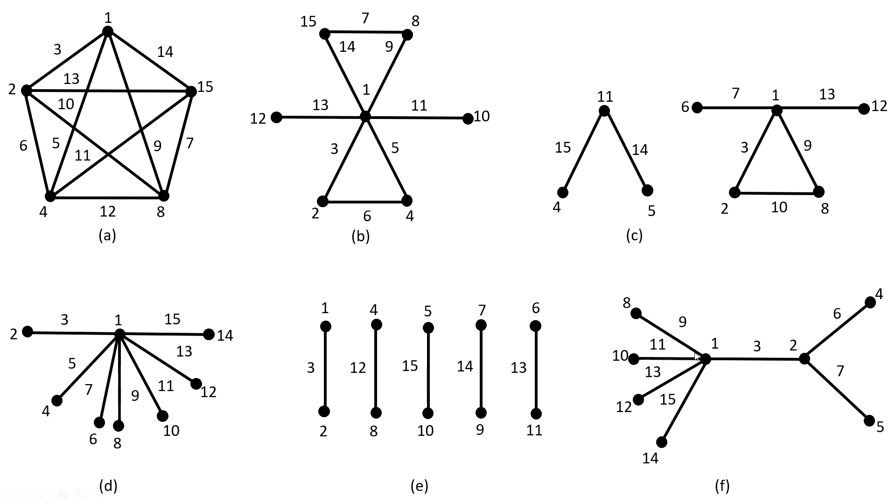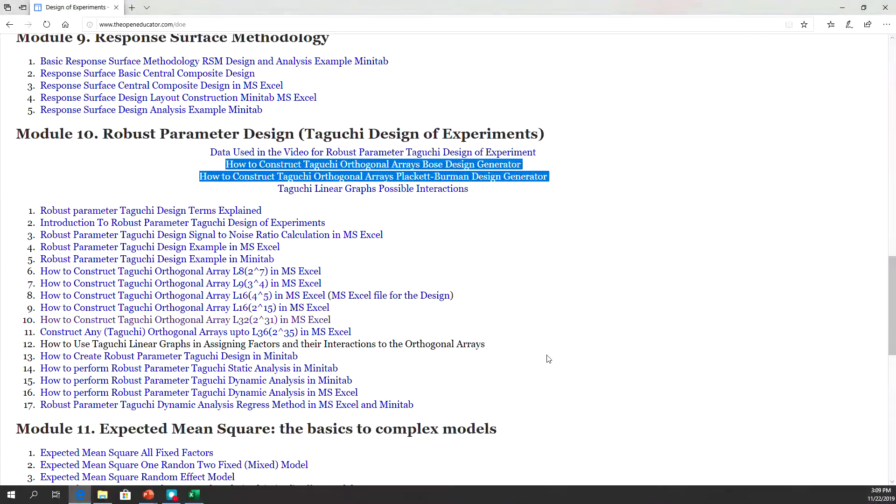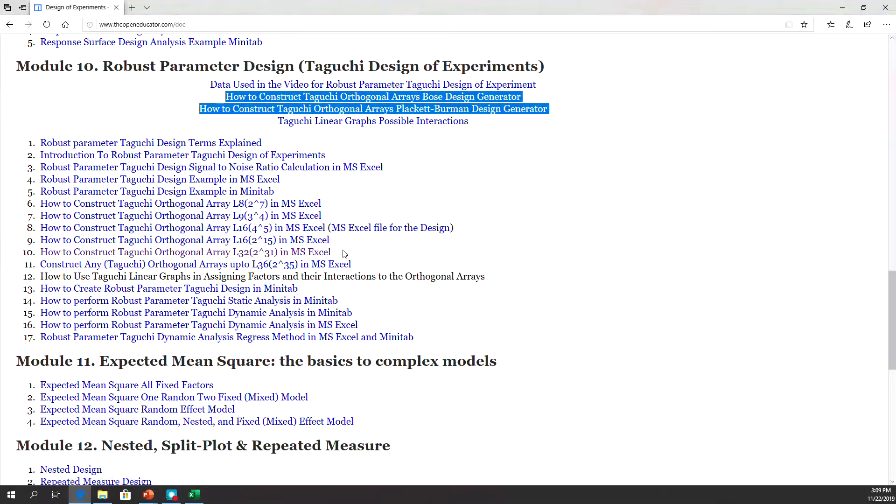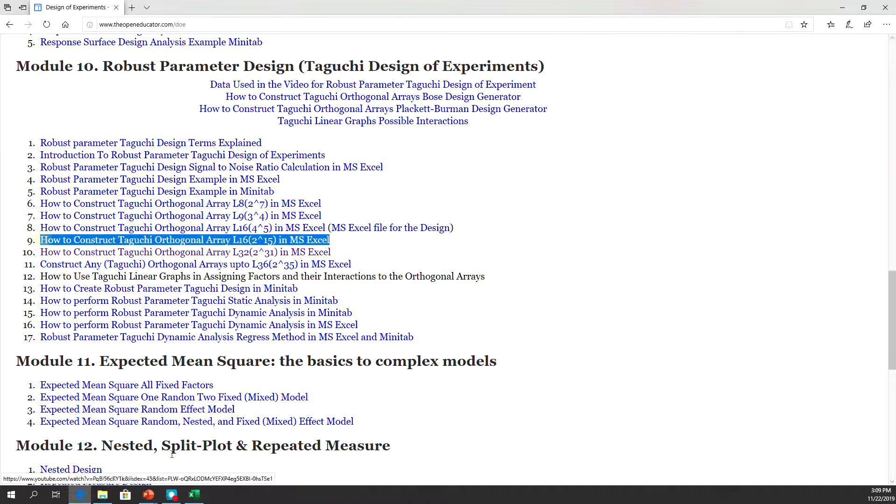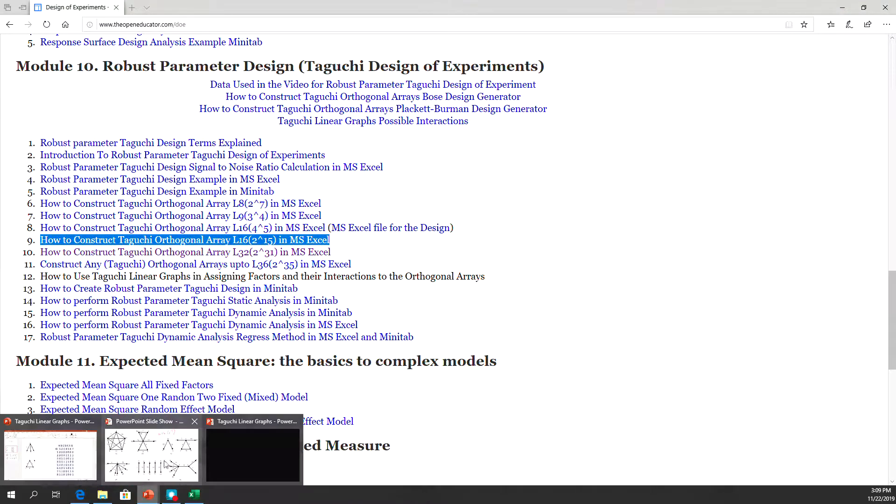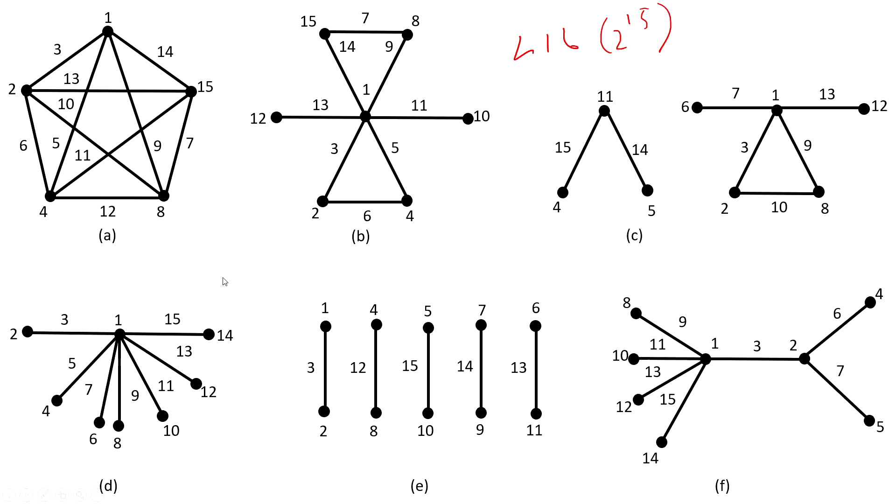Let's go to the next page. Here is L16. This is a design with linear graphs for L16 2 to the 15, so 15 variables with two levels each. For L16, you can find how to create this design right here.